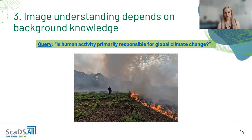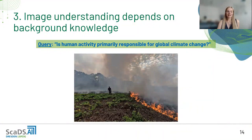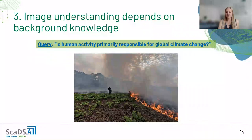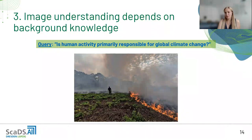We also found that some images require background knowledge to understand, and that knowledge differs across people. For example, for the topic 'is human activity primarily responsible for global climate change,' you would need to know that burning fields and forests is bad for the environment, otherwise the image would not seem relevant.